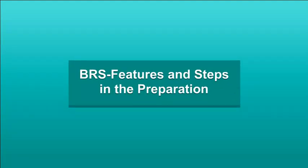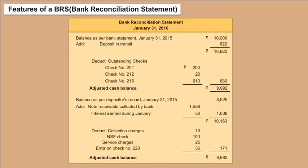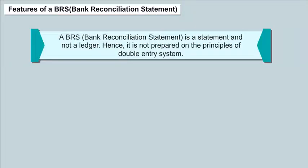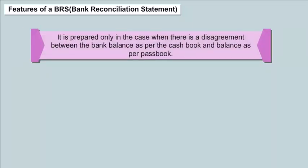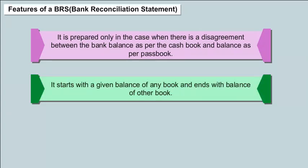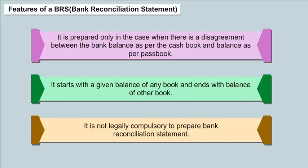Features of a Bank Reconciliation Statement: A BRS is a statement and not a ledger; hence, it is not prepared on the principles of the double entry system. It is not a part of books of accounts. It is prepared periodically — weekly, monthly, quarterly, etc. — depending upon the volume of bank transactions. It is prepared only when there is a disagreement between the bank balance as per the cash book and the balance as per the pass book. It starts with a given balance of one book and ends with the balance of the other. It is not legally compulsory to prepare a bank reconciliation statement.